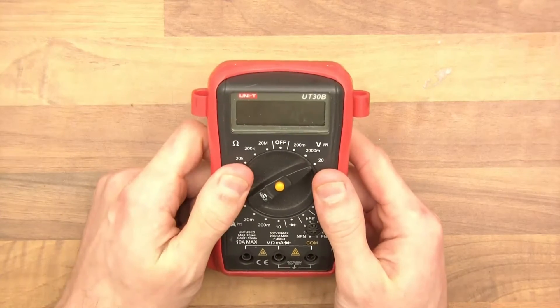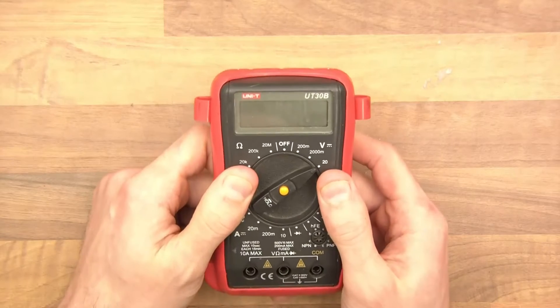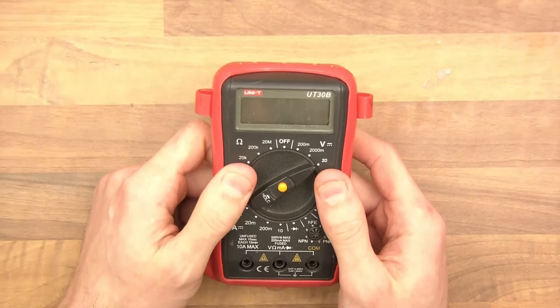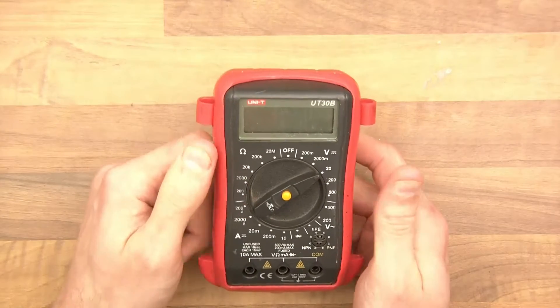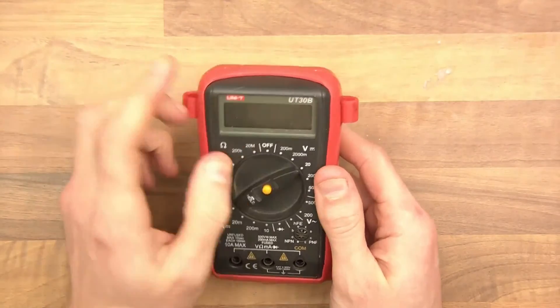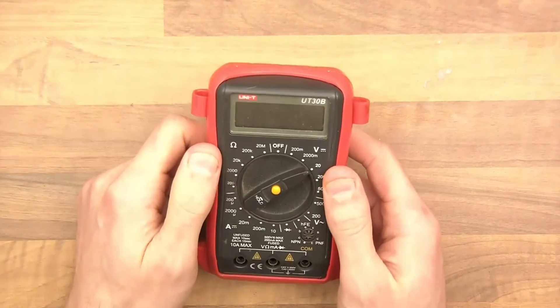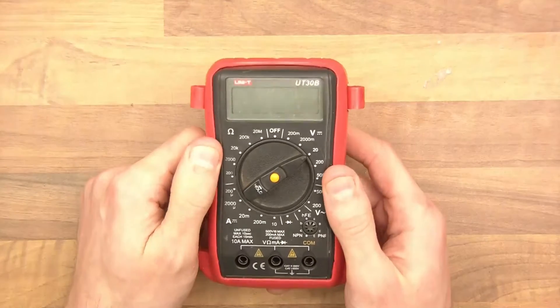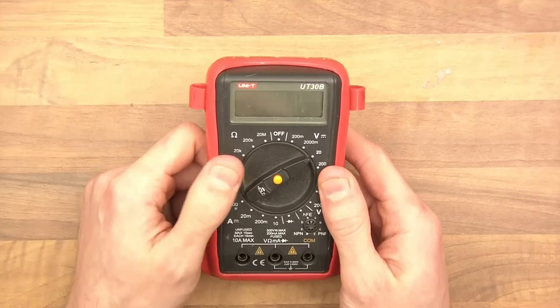So this is my old multimeter and unfortunately this has died now. I have three multimeters and this is the best of the three, by far the best of the three actually. It's by a company called UniT, this is UT30B, it's an old model but still this is going to be the benchmark for all the other tests.